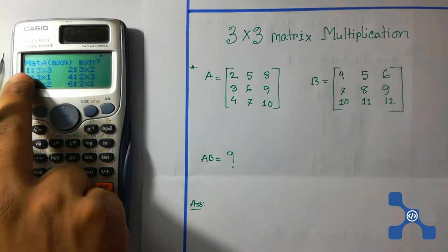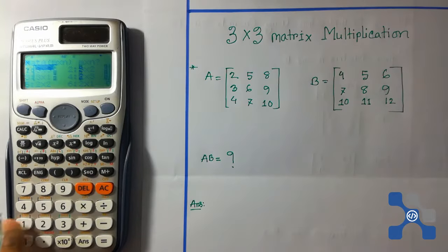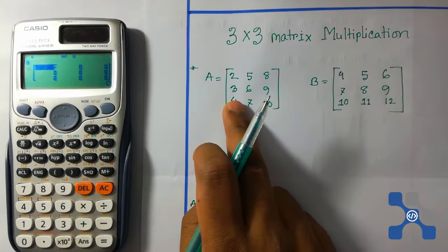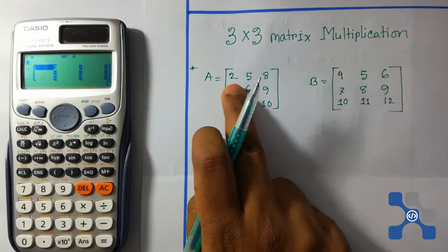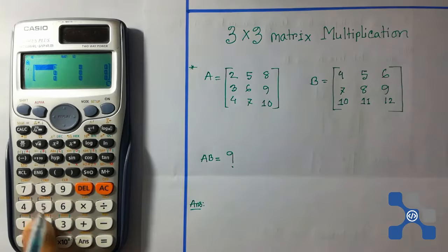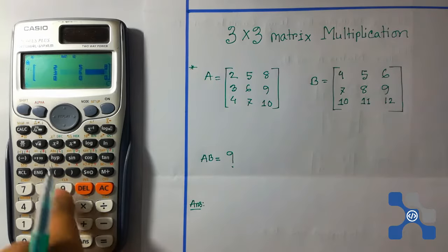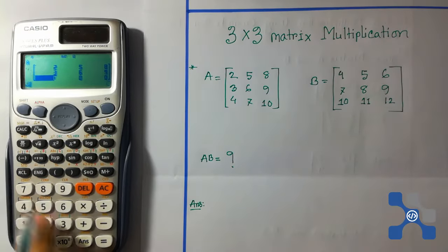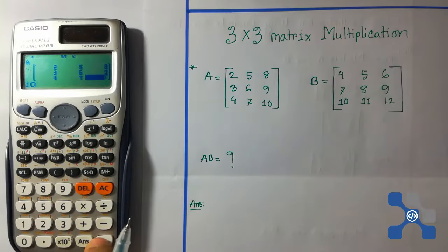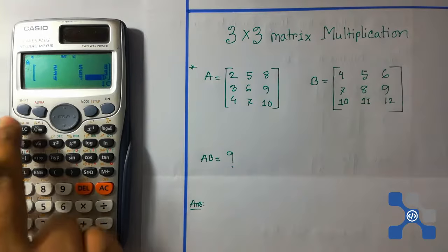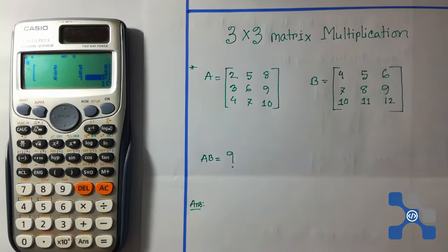Put this element. Our first row is 2, 5, 8. Second row is 3, 6, 9, and third row is 4, 7, 10. OK, now press shift button and then press 4.